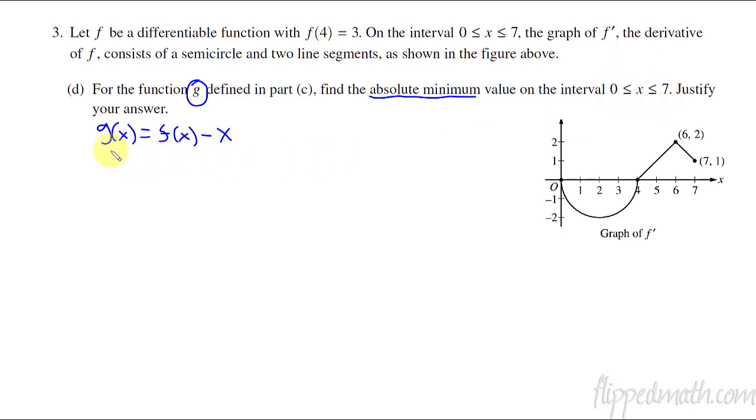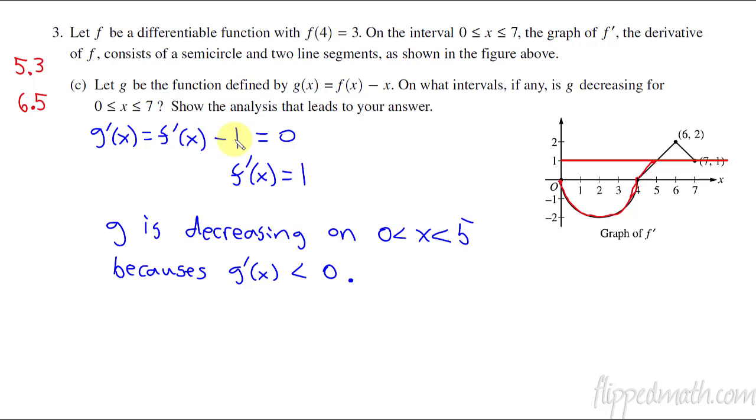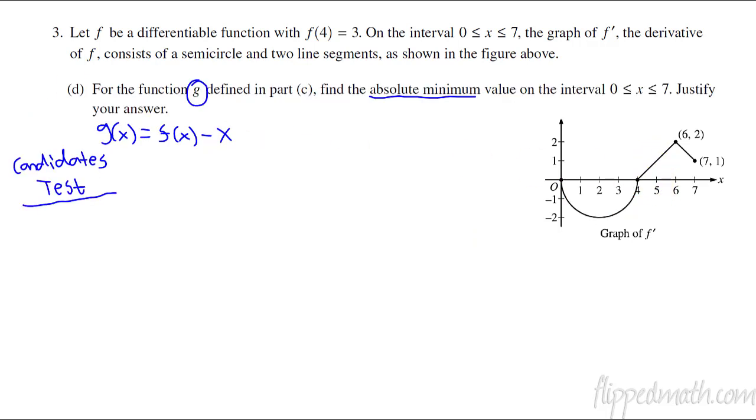And therefore, I've got the end points. So the candidates test will give me, I'm going to write that over here so you see what I'm talking about. So the candidates test is going to be the end points and the critical points. So what was my critical point? Well, if I go back up to part c, I already found when the derivative equals 0. It equals 0 when f prime equals 1, which was right here. All right, so that's an x equals 5. So I know I have a critical point, critical point at x equals 5 from the last problem.